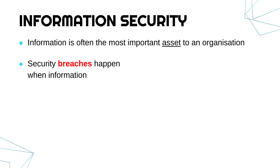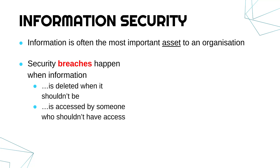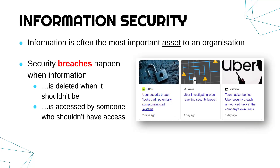A breach happens when information is either deleted when it shouldn't be, or accessed by someone who shouldn't have access. A breach happens when something goes a bit wrong related to information. It can be accidental and it can also be deliberate. Breaches happen unfortunately all the time, which is why this is such an important topic to learn about.